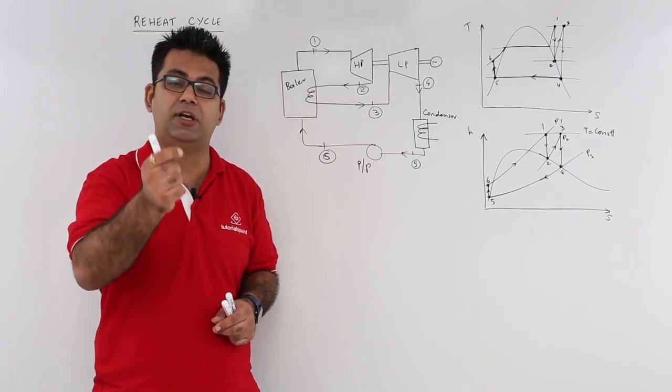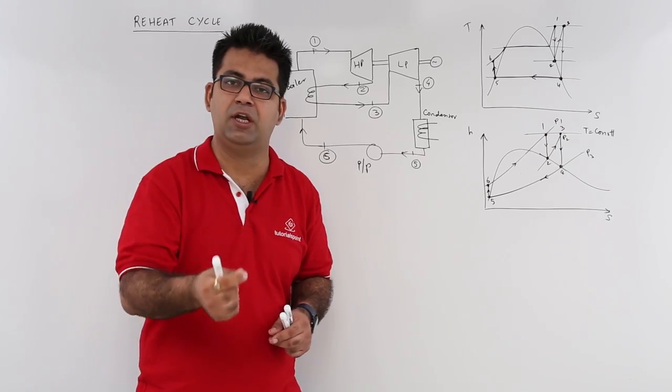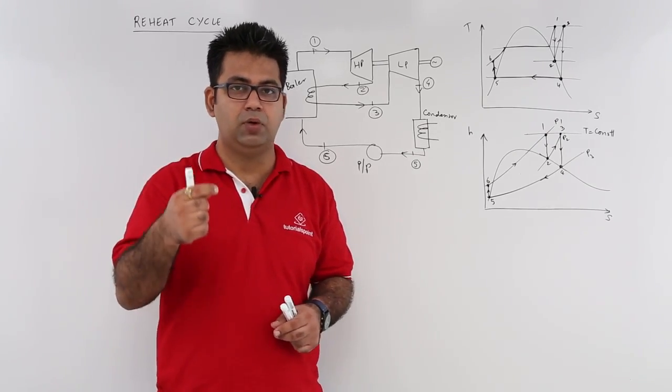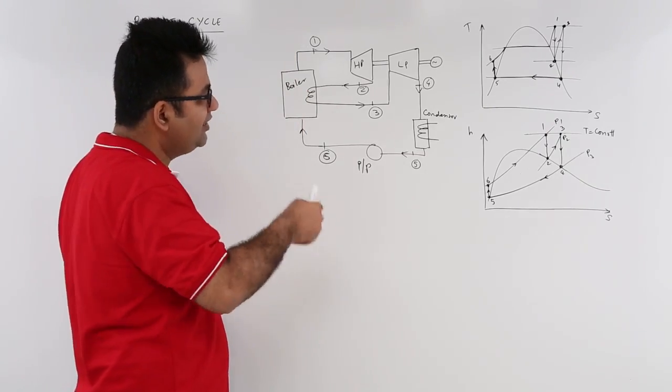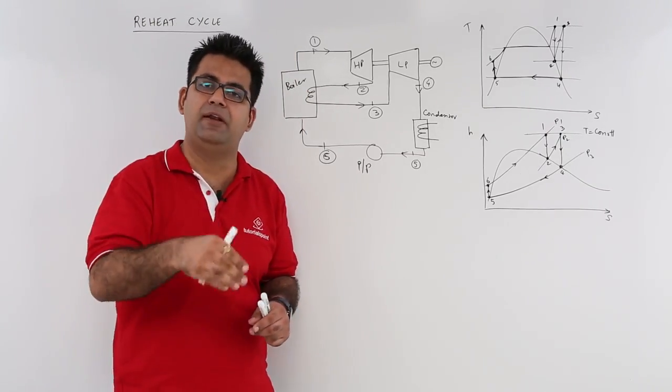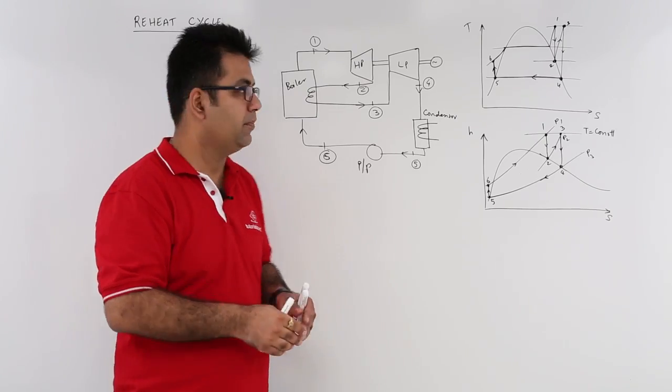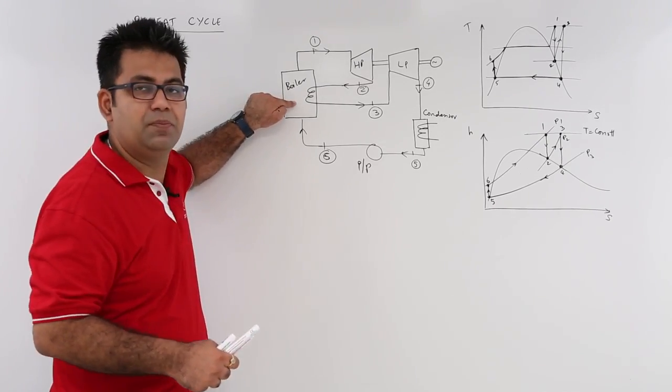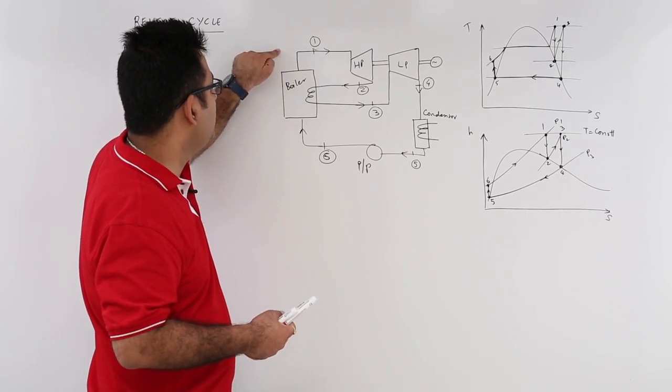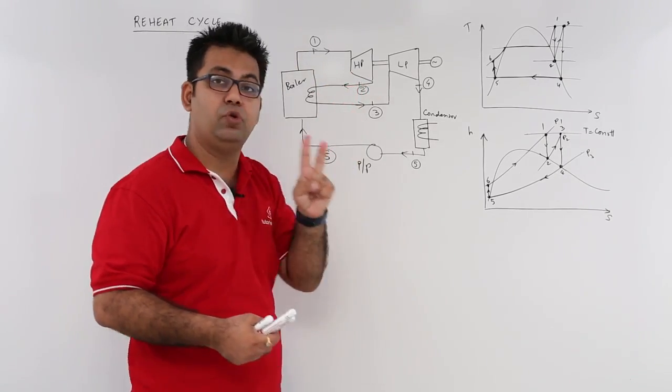Every cycle that you study is a betterment of the previous cycle. What happens is the steam which is produced in the boiler goes into the first turbine, and in this cycle we have two turbines. The first turbine is the high pressure turbine.